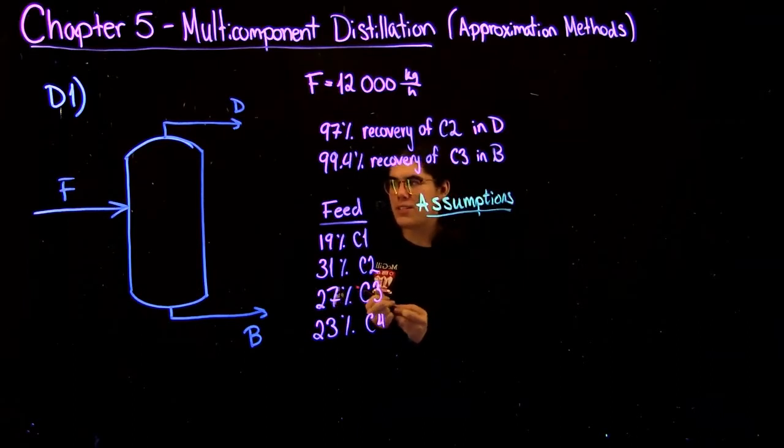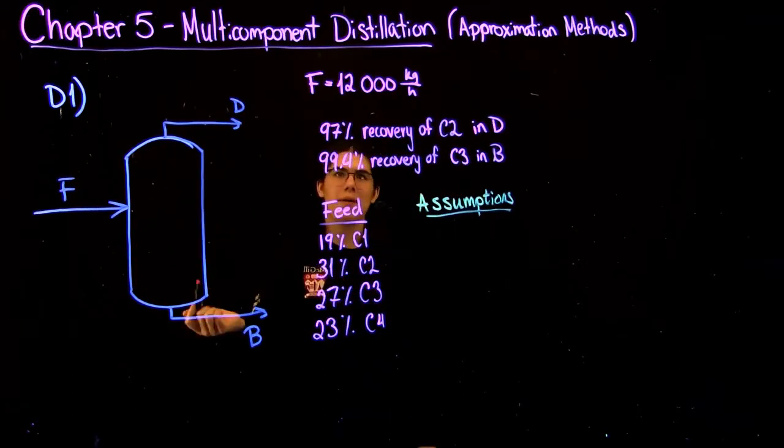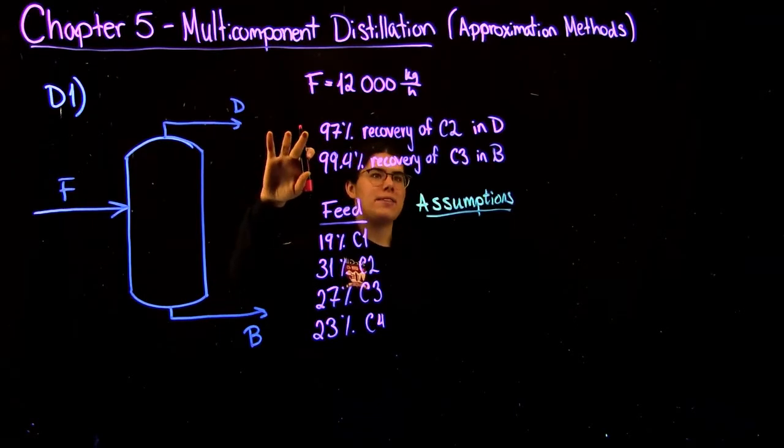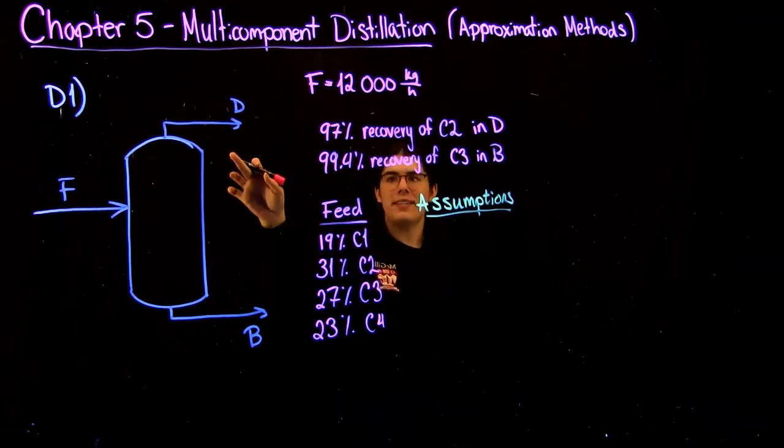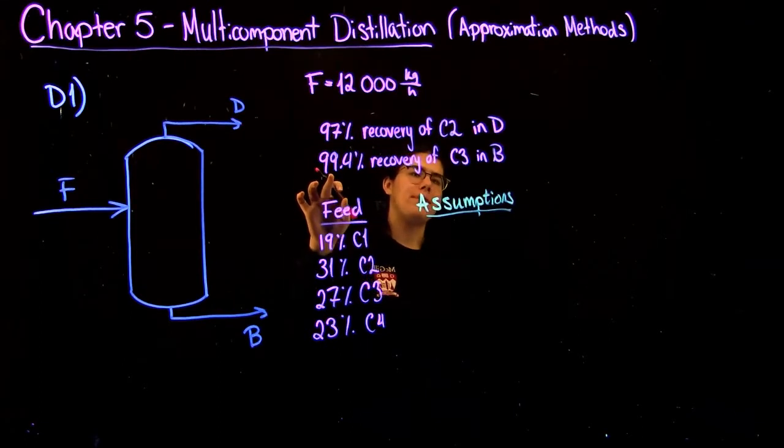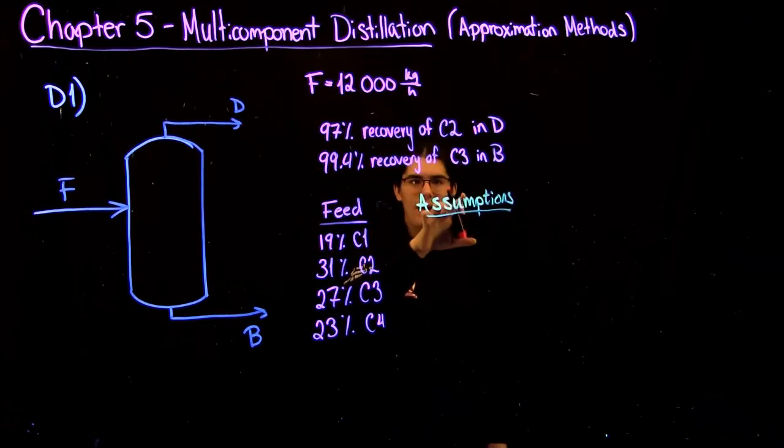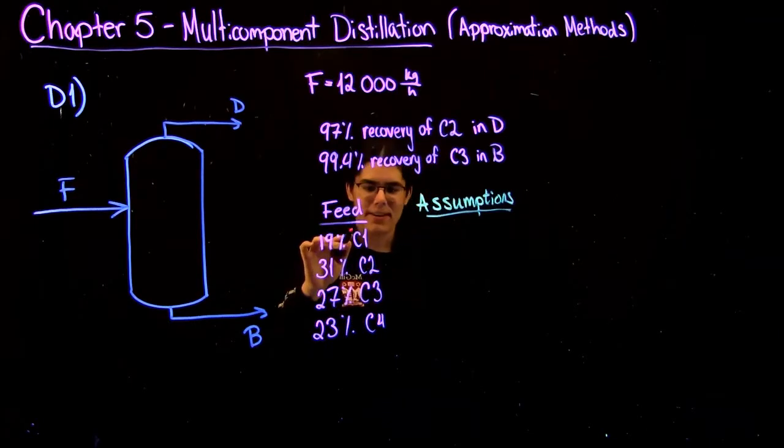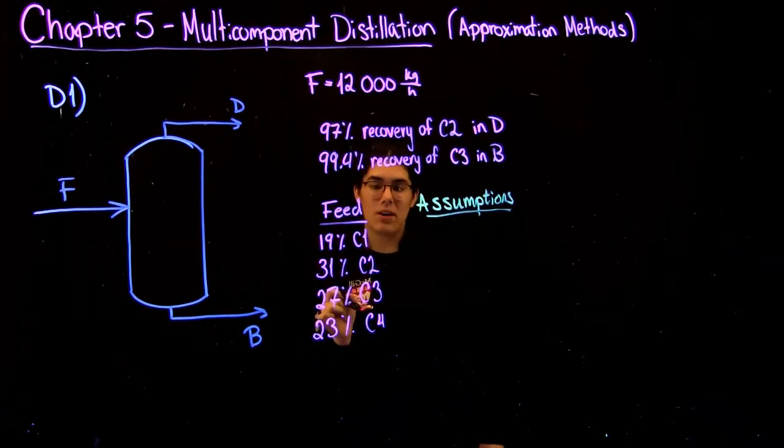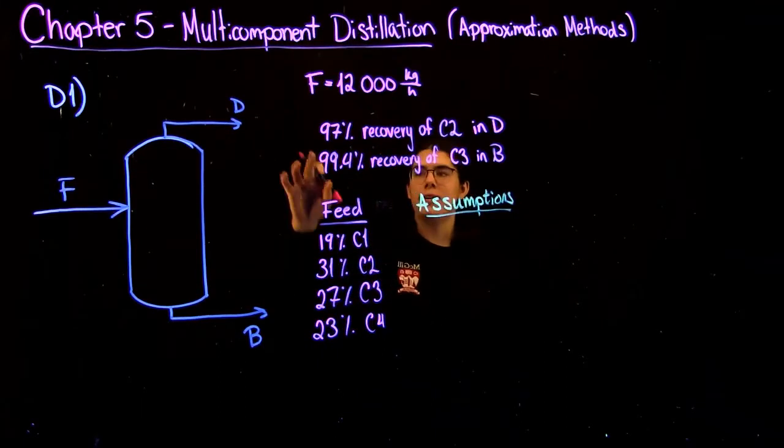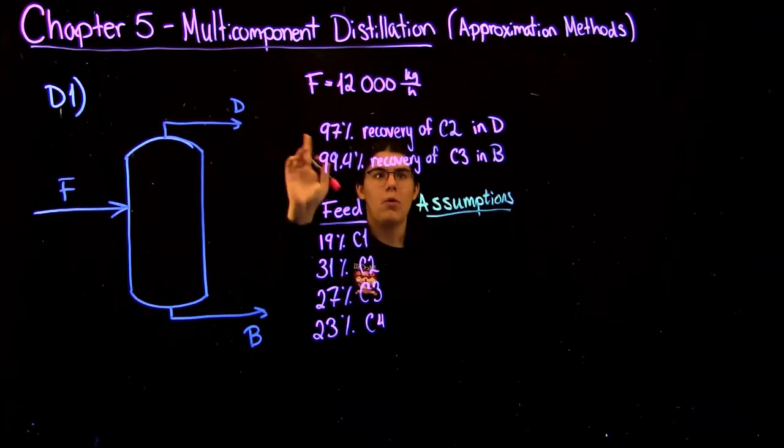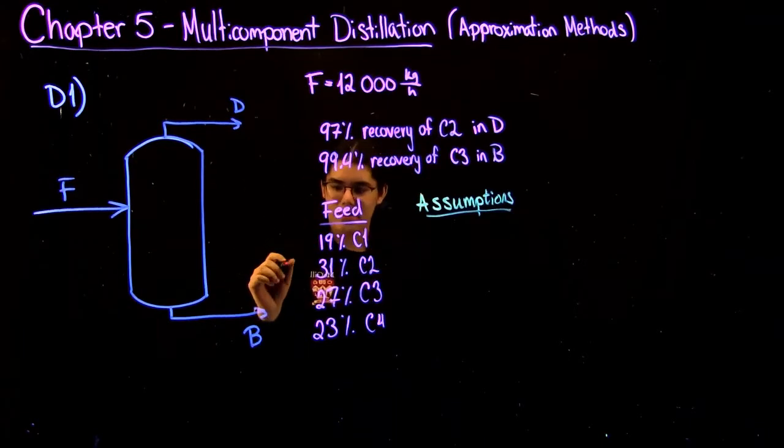In the question, we have a feed going in, distillate and bottoms. We're told that the feed is 12,000 kilograms per hour and that we have 97% recovery of ethanol in the distillate and 99.4% recovery of propanol in the bottoms. So the first thing we have to do is identify which of our components are which of our keys. Because we have 97% recovery of ethanol in the distillate, we can say that our ethanol is going to be our light key.